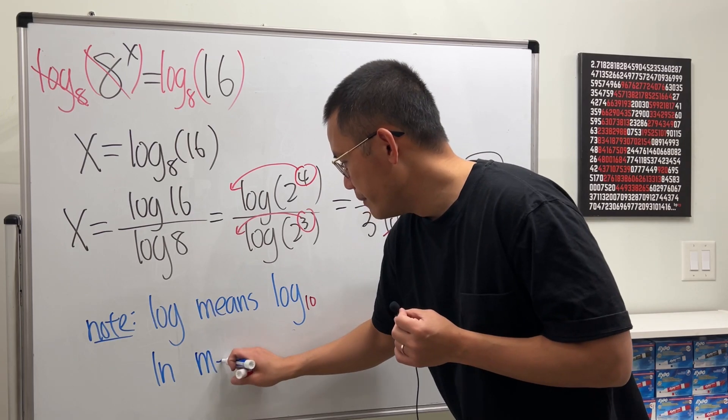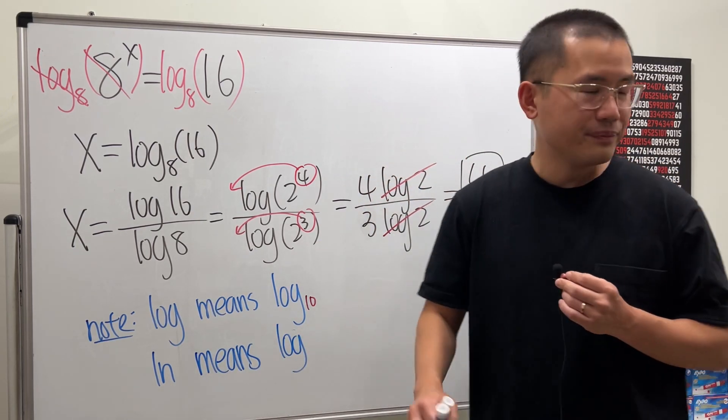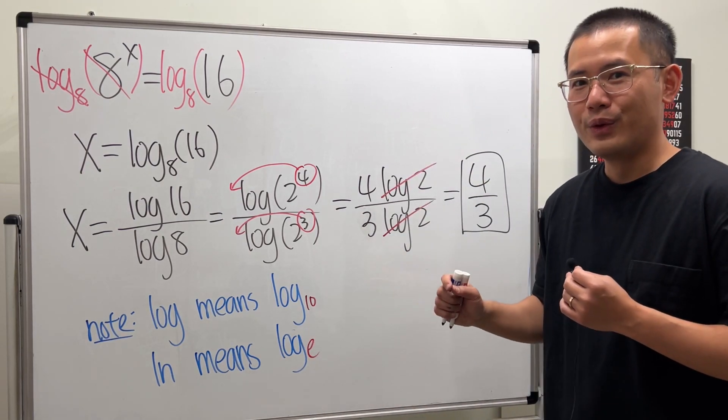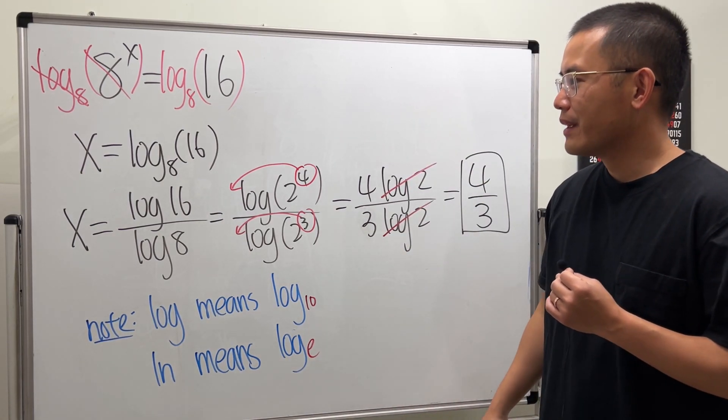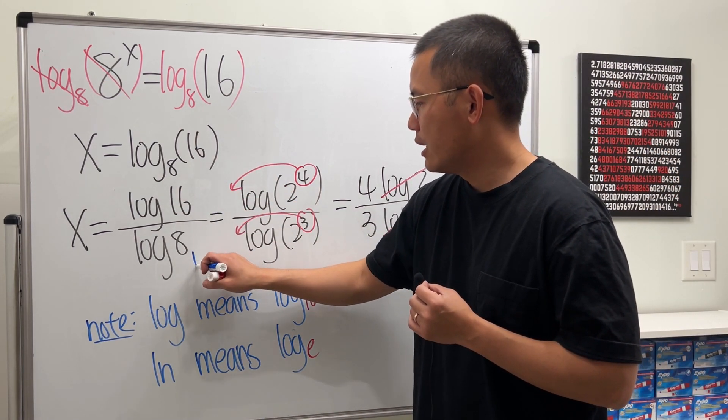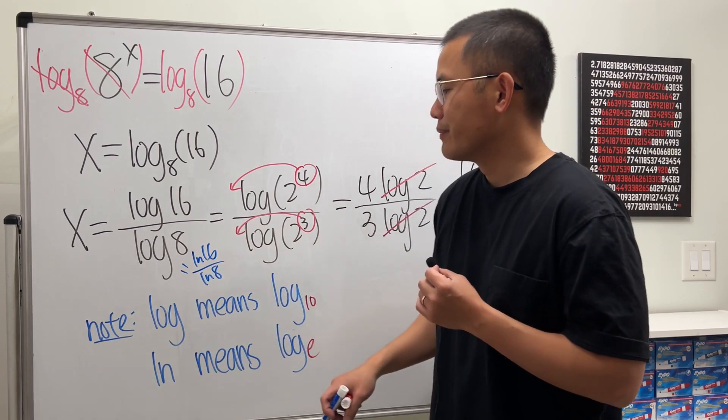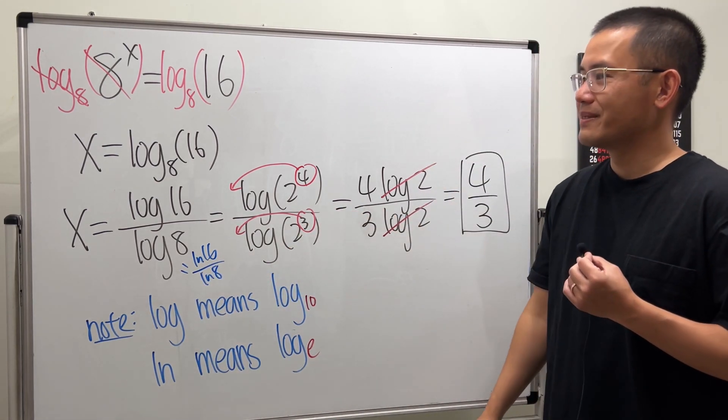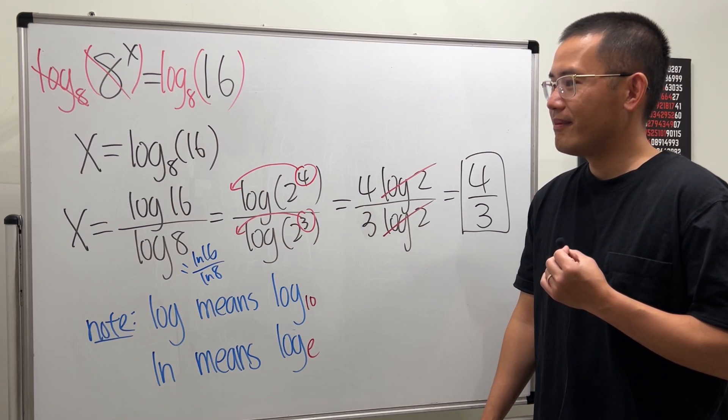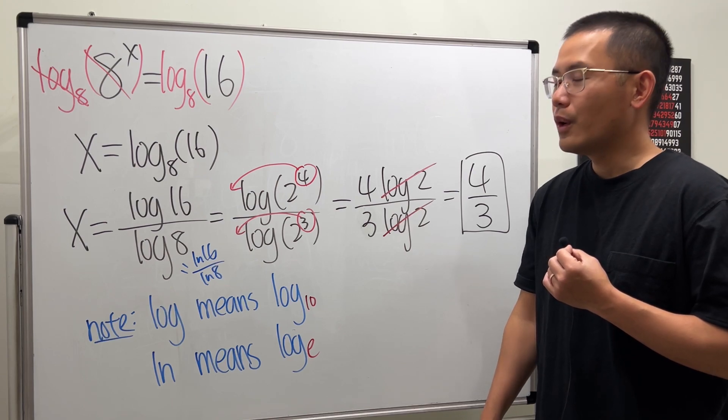This right here means we have log with a special number E, which is about 2.71828, so on, so on, so on. So, you could also have written this as L-N 16 over L-N 8. That's fine too. And then this right here still works. Okay?